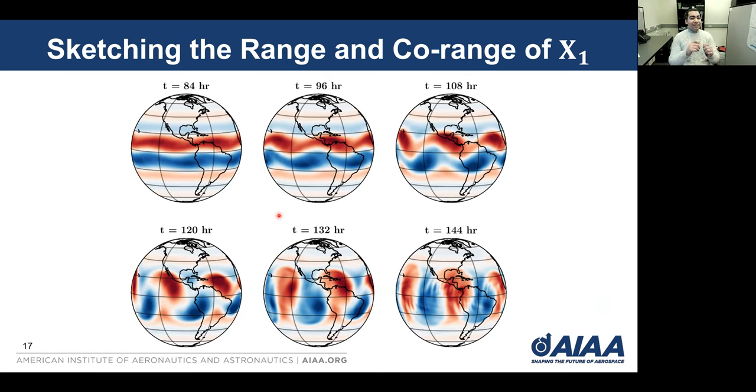Even if we replace X1 with this core approximation C1, which is much smaller, just k by k, where k is some target rank that is much smaller than the dimension of the system.